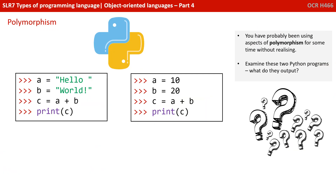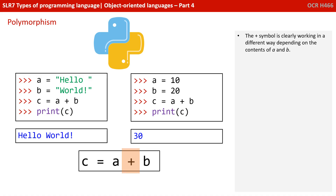Before we go into this in more detail, you've probably been using aspects of polymorphism for some time without realising it. If you've ever programmed in Python, take a look at these two code examples on the screen now. What do they do? Well, the left-hand version prints the text string 'hello world', and the right-hand outputs the number 30. The plus symbol on the third line of code, C equals A plus B, is clearly working in a different way depending on the contents of A and B.